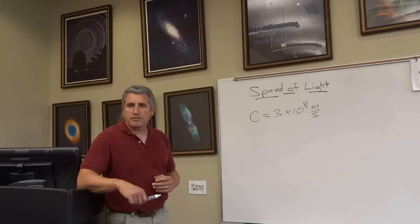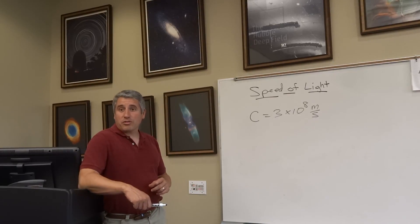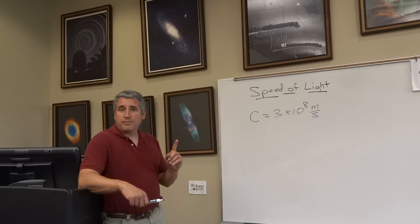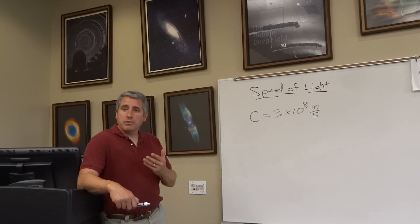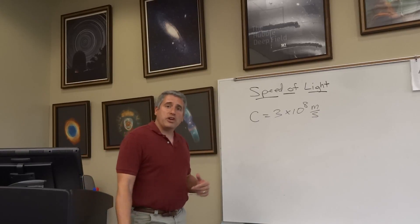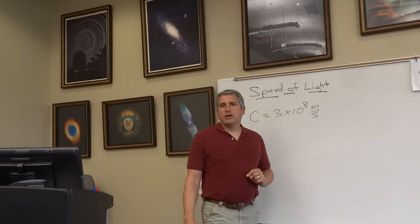Just to put that in perspective, that is 7 laps around the Earth in 1 second. At that speed, light travels between the Earth and the Moon in 1.3 seconds. It travels between the Sun and the Earth in about 8 minutes.